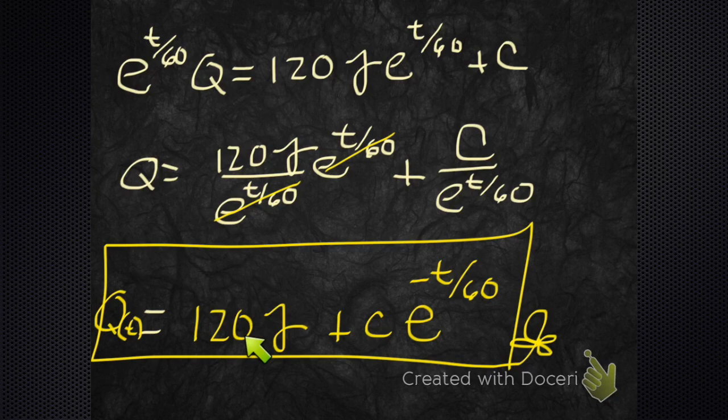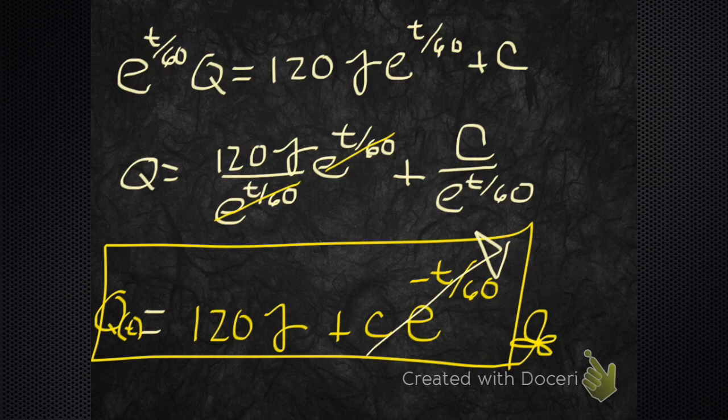It goes to 120 gamma. As t goes to infinity, that second term goes to zero. So you could say that this goes to zero. Over time, what's the concentration? They're calling it Q_L, the limit. It's going to be 120 gamma.